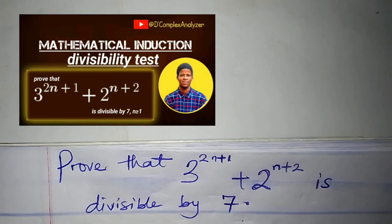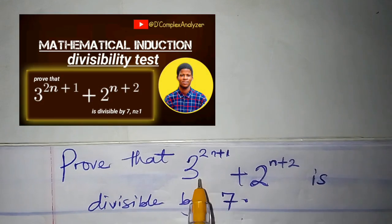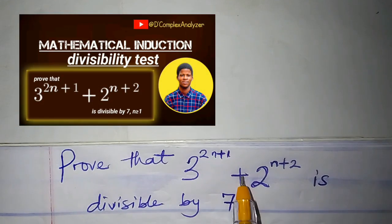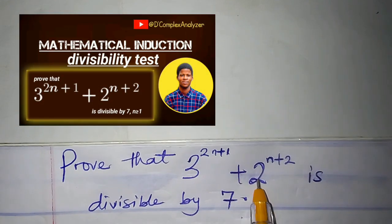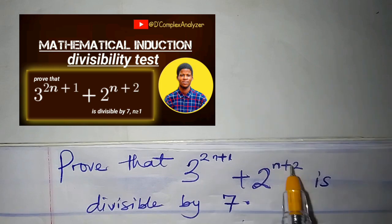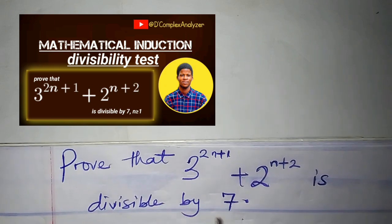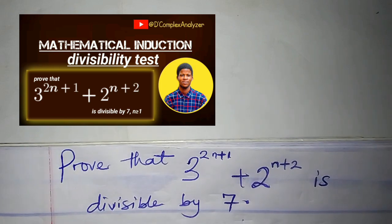How do we prove that 3 to the power of 2n plus 1, plus 2 to the power of n plus 2, is divisible by 7?